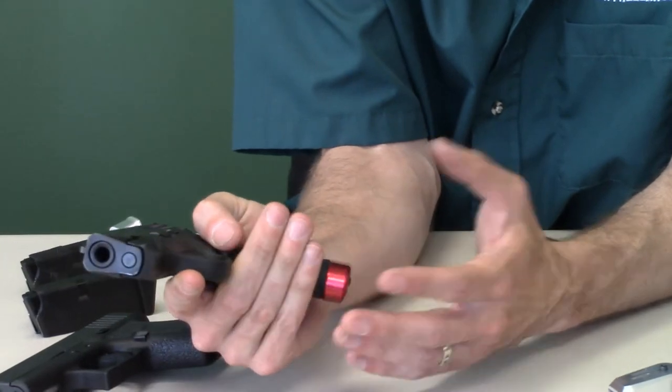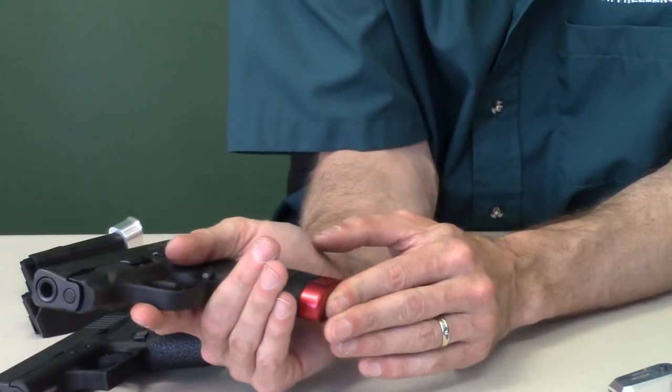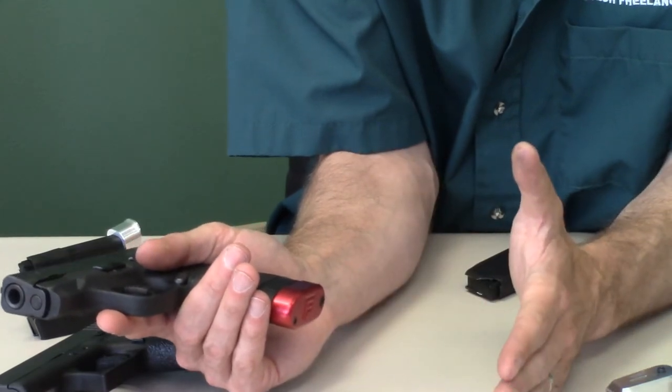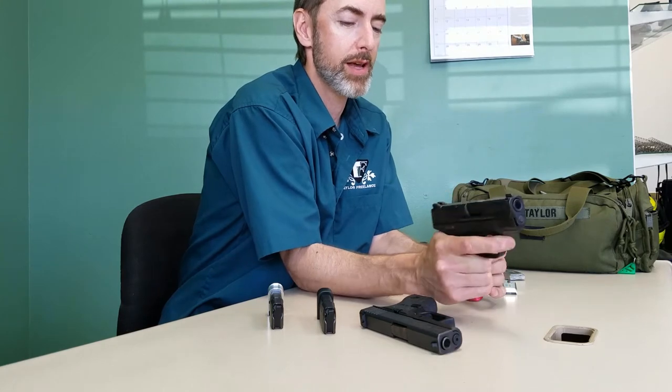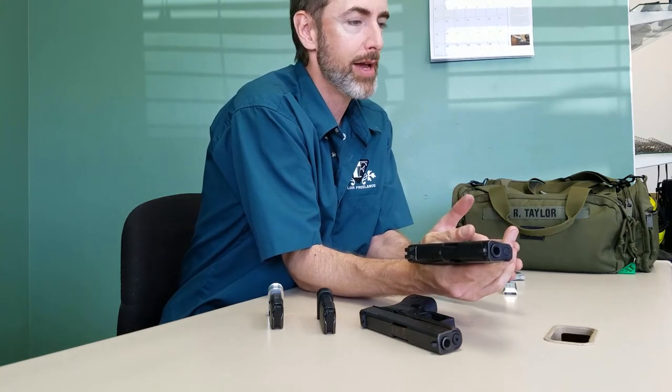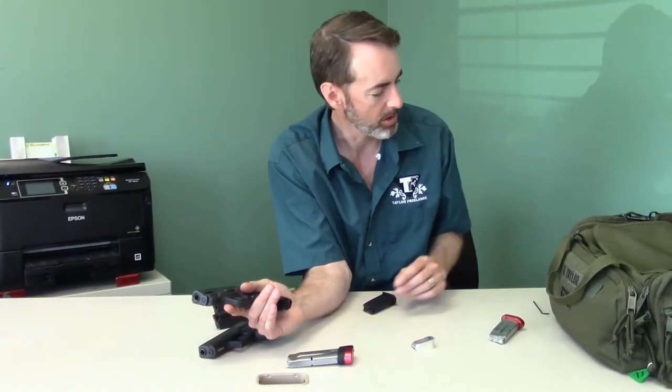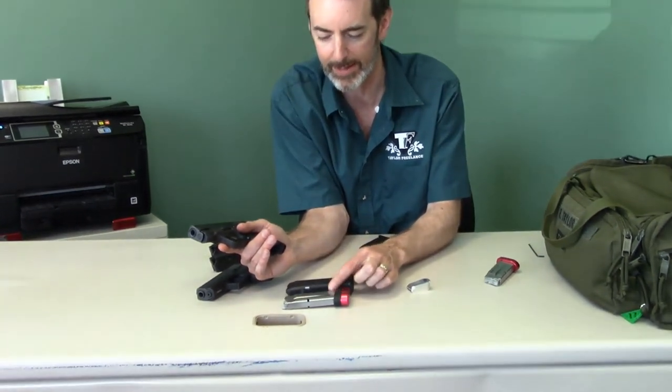You'll also see products on the market that are plus two extensions. It seems like there's an ever-growing market of extensions making these longer and longer, which misses the point. This gun in this configuration is actually fairly difficult to conceal because of the length of the magazine. If I want to run a magazine that's that long, why don't I just go out and get a magazine like this?